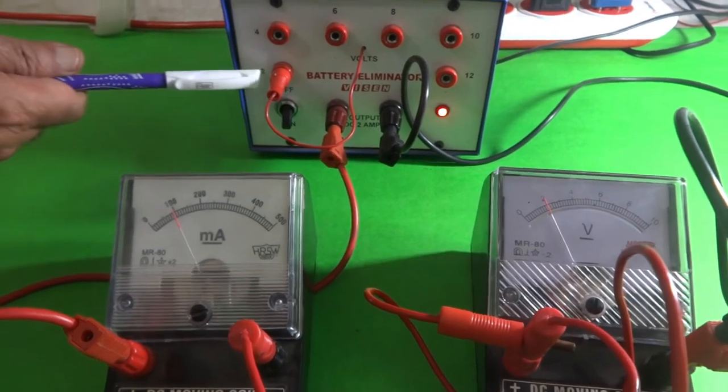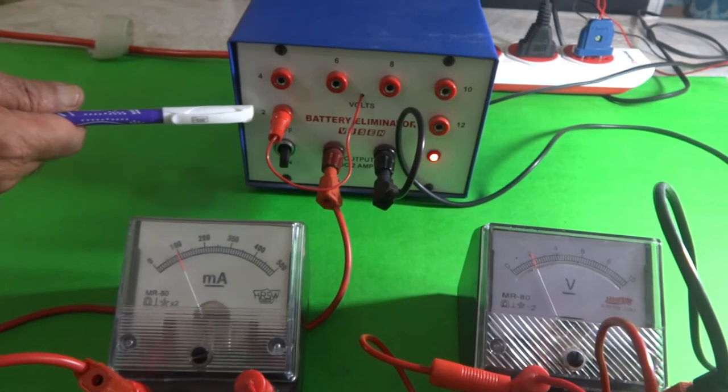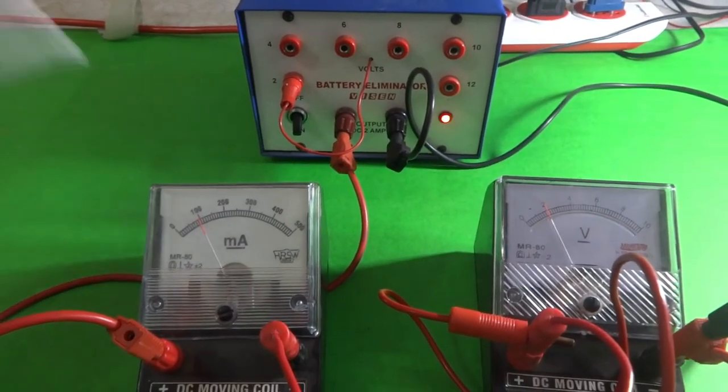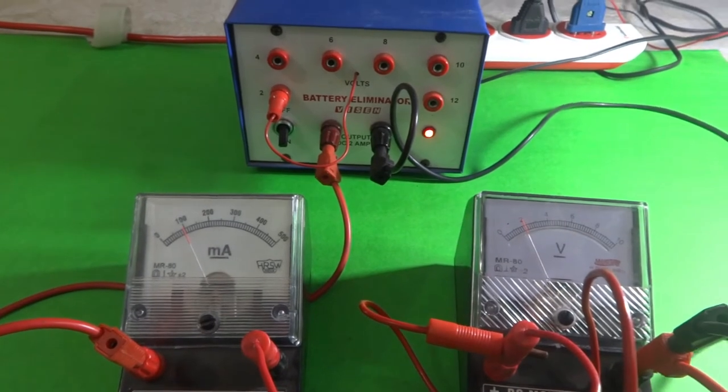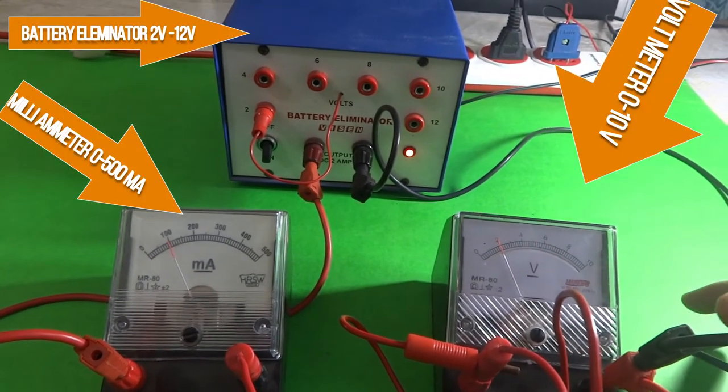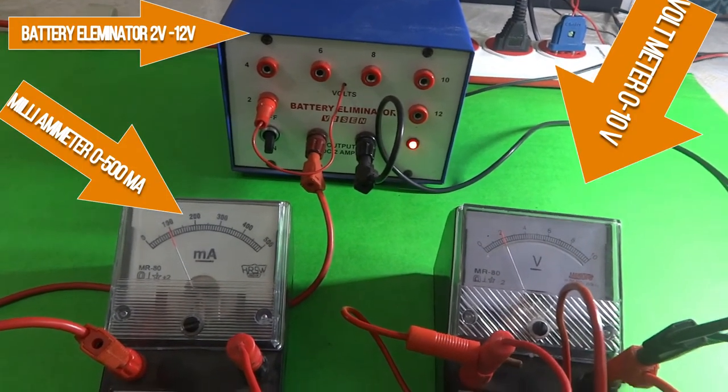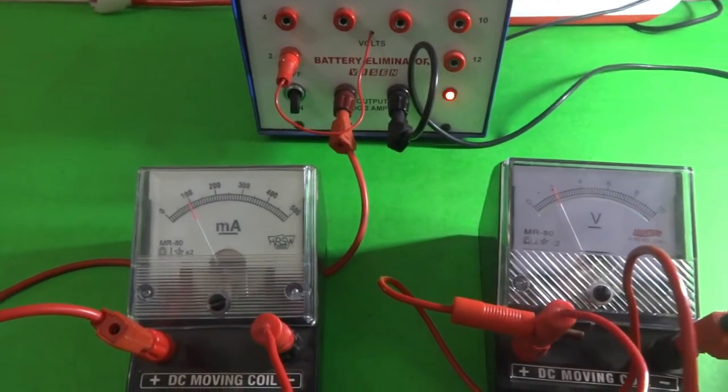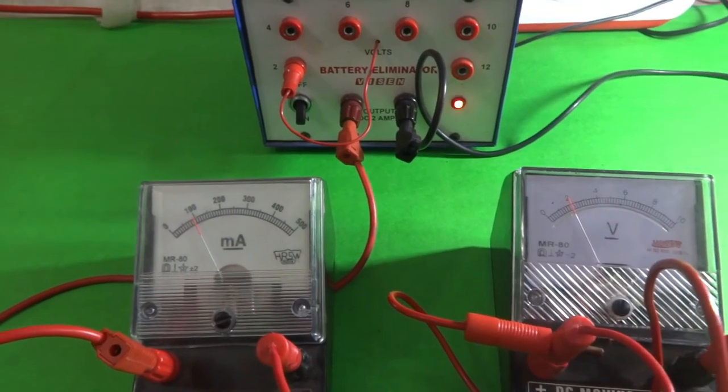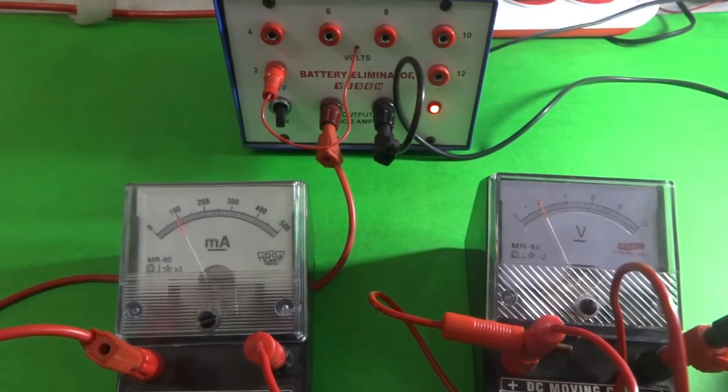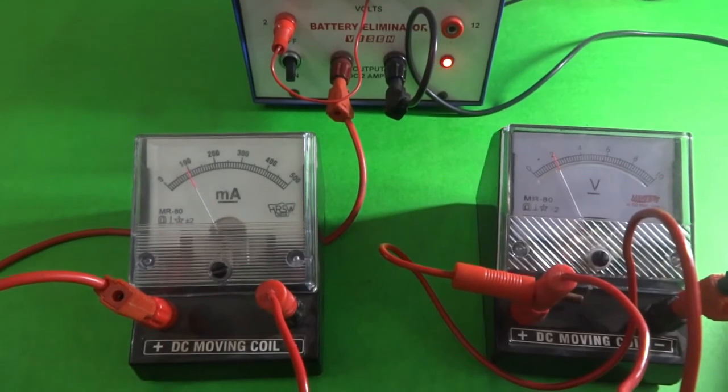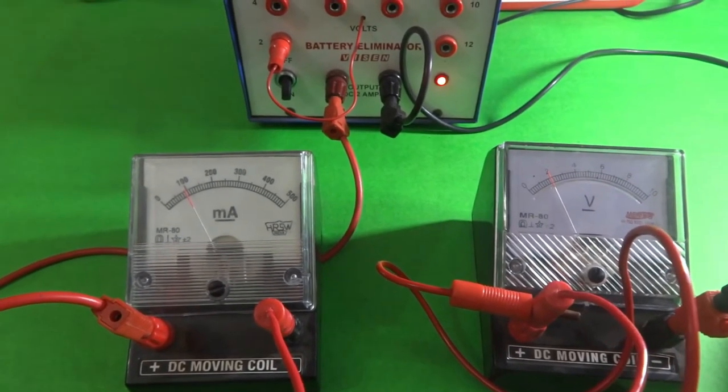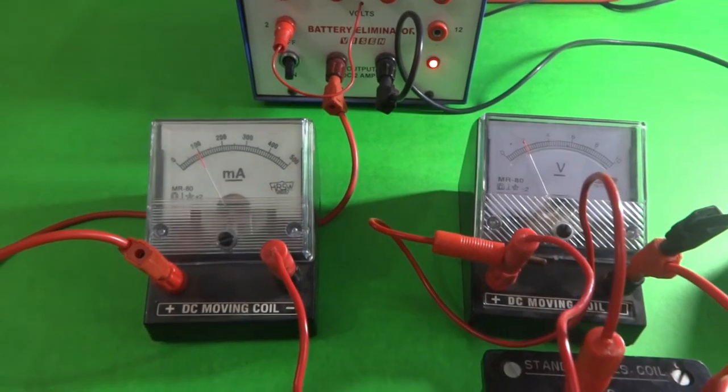I have operated this battery eliminator at 2 volts. Now we can observe the readings here in milliampere is 100 milliamperes and here the reading is 2 volts. If you take the ratio then you will get 20 ohms because we know that the ratio of V and I is nothing but 20.